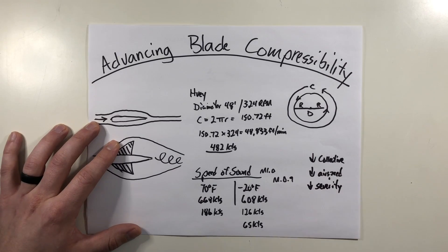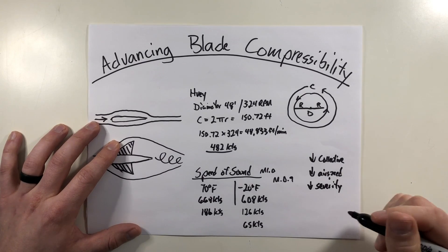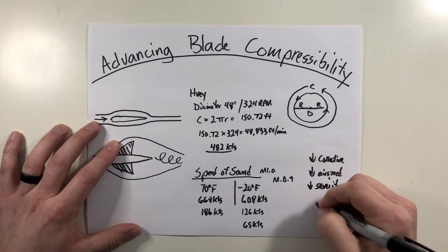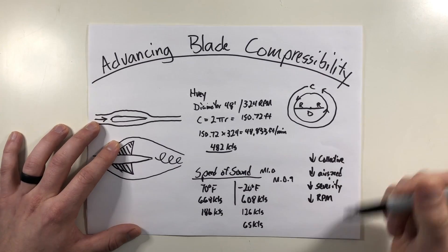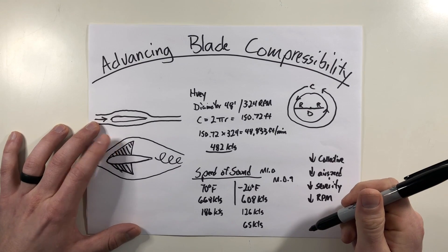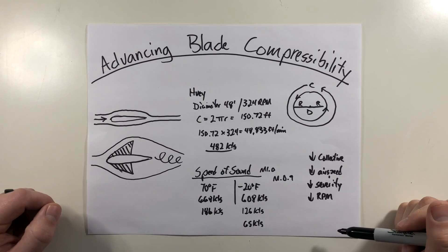And in some situations, some engineers know you're going to be operating in extremely cold environments and you want to be doing some high speed operations. Some engineers will even rig the rotor RPM to be slightly slower so that you don't get into these advancing blade compressibility environments even sooner, but that's going to decrease your hover performance if you're to do something like that.